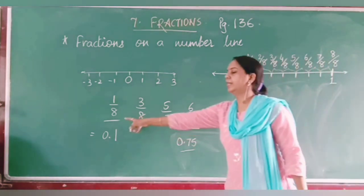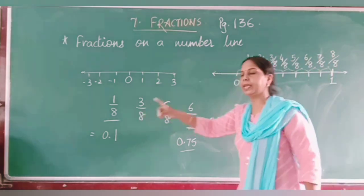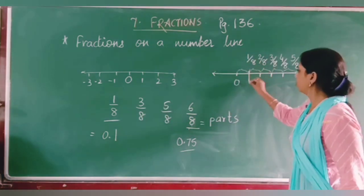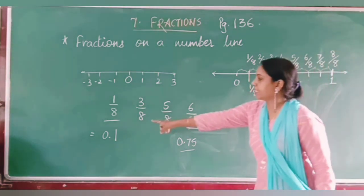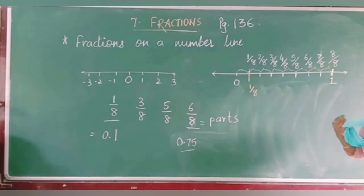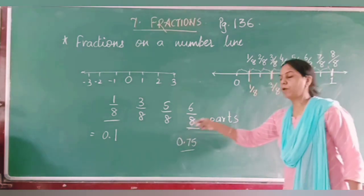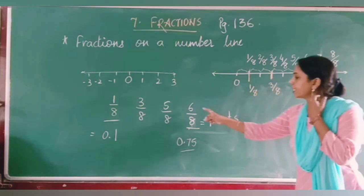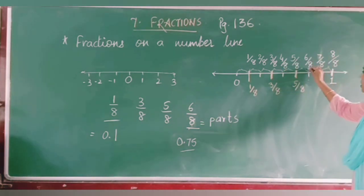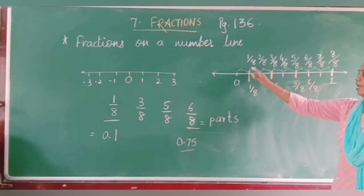Now you can represent and circle your required numbers on the number line. The first number is 1 upon 8 — locate it here and circle it. The second number is 3 upon 8 — mark it here. Next is 5 upon 8 — mark it here. And next is 6 upon 8 — mark it here. In this way you can represent fractions on the number line.